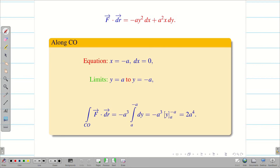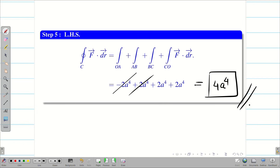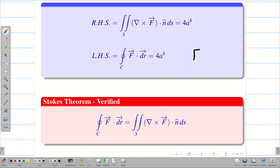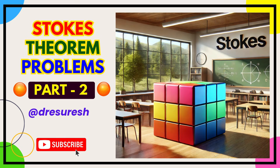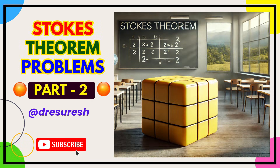Now we found all four line integrals: along OA = −2a⁴, along AB = 2a⁴, along BC = 2a⁴, along CO = 2a⁴. Adding everything: −2a⁴ + 2a⁴ + 2a⁴ + 2a⁴ = 4a⁴. Therefore LHS = 4a⁴. Since RHS = LHS = 4a⁴, Stokes theorem is verified for the given F vector. Thanks for watching — hope you found this video helpful. Subscribe to our channel and share with your friends. See you in the next video.